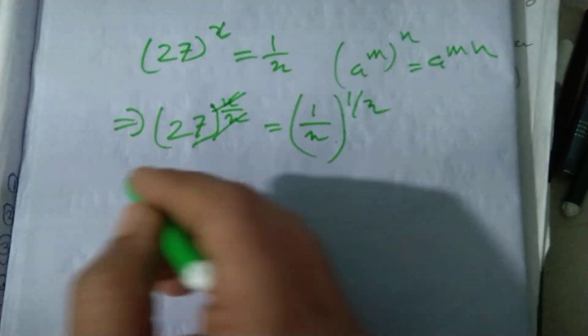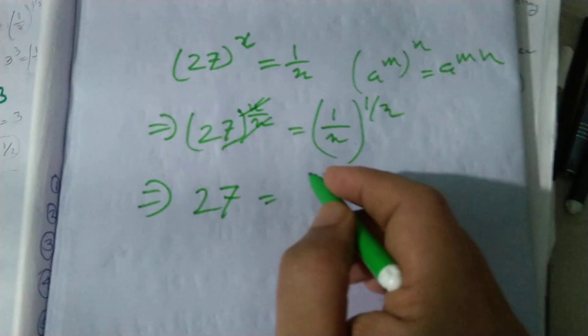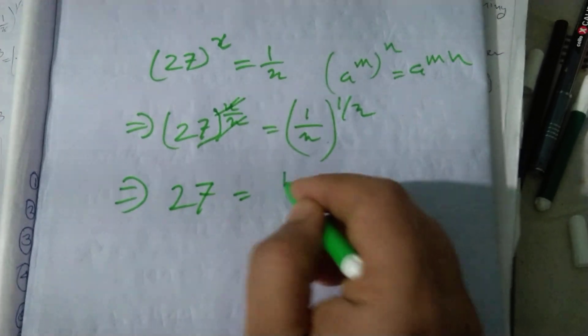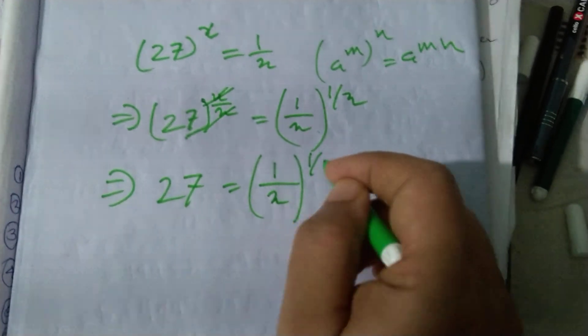So this portion and this portion cut, so we get 27 is equal to 1 by x whole to the power 1 by x.